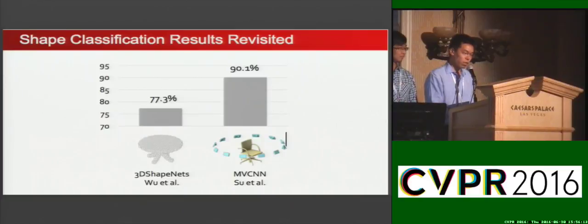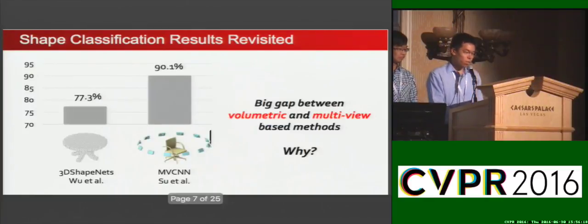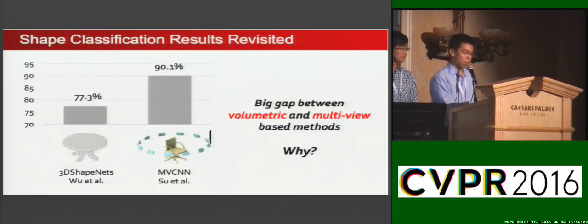This is counter-intuitive, since volumetric CNNs explicitly operate on 3D structures. So what's the reason behind it? Is it possible to close the gap?